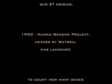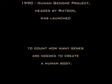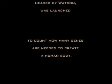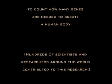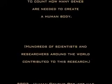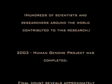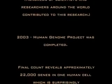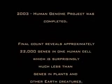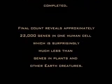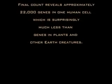In 1990, the Human Genome Project, headed by Watson, was launched to map out our DNA gene sequence — counting how many genes are needed to create a human body. Hundreds of scientists around the world contributed to this research, which reached its goal in 2003. At final count, we have approximately 22,000 genes in one cell, which is surprisingly much less than the genes of plants and other earth creatures.